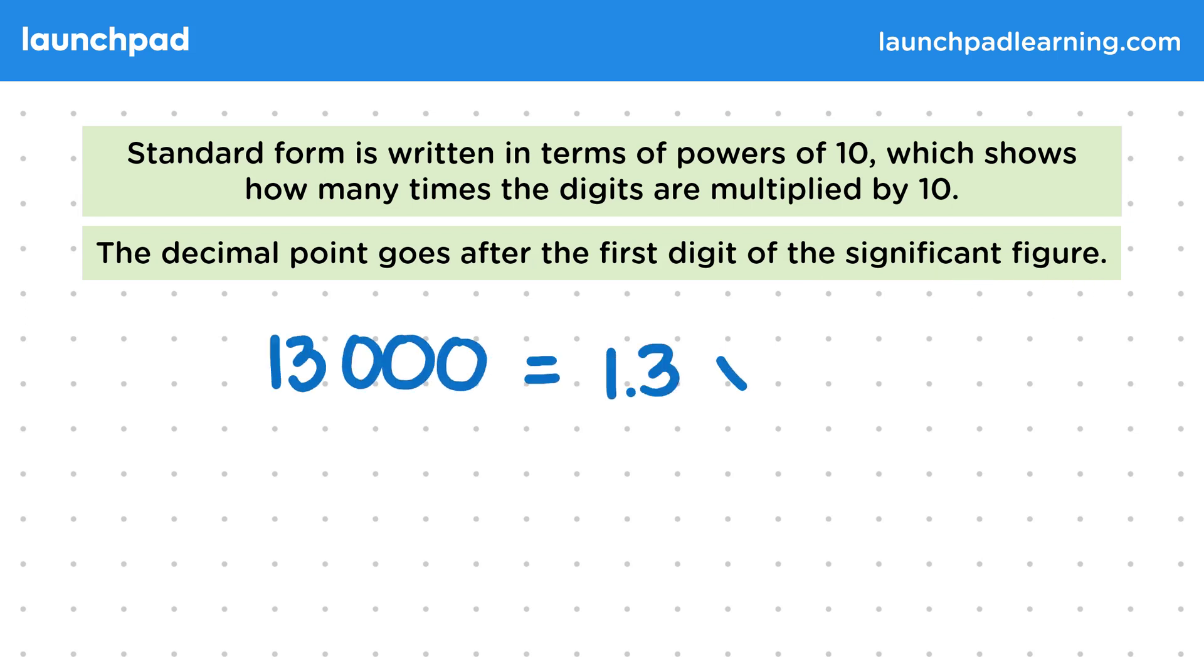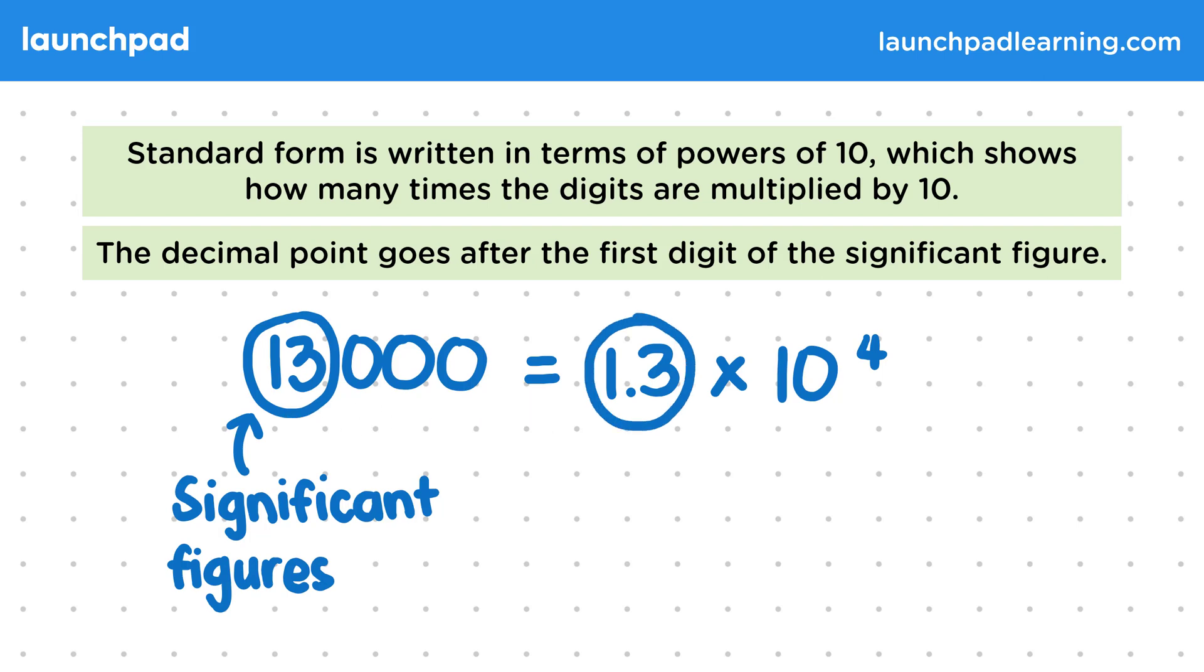So in this example, 13,000 is equal to 1.3 times 10 to the power of 4. In the full number, the 1 and the 3 are the significant figures. Significant figures are numbers that tell us the most about the value of the overall number. So a decimal point goes after the first digit of our significant figure, making it 1.3.